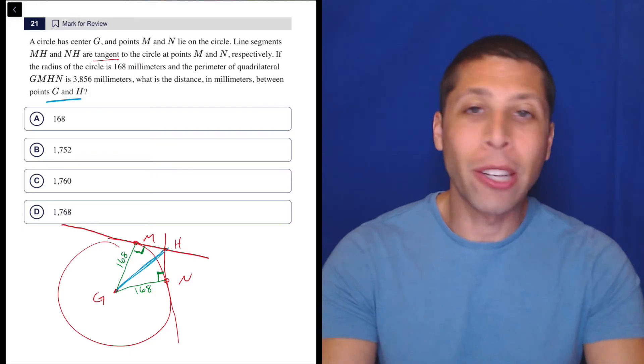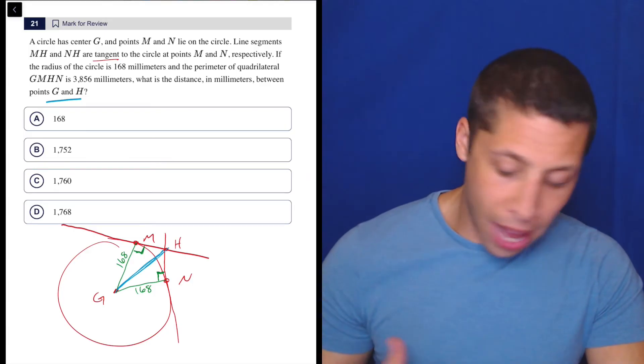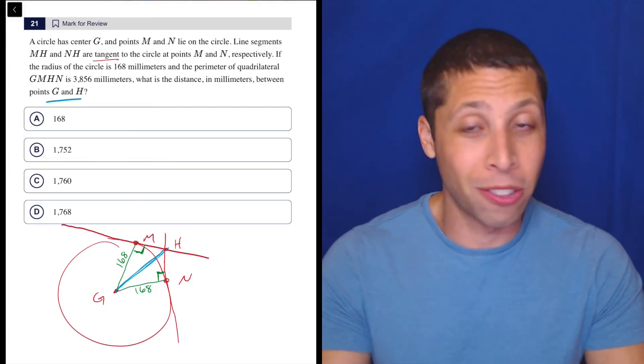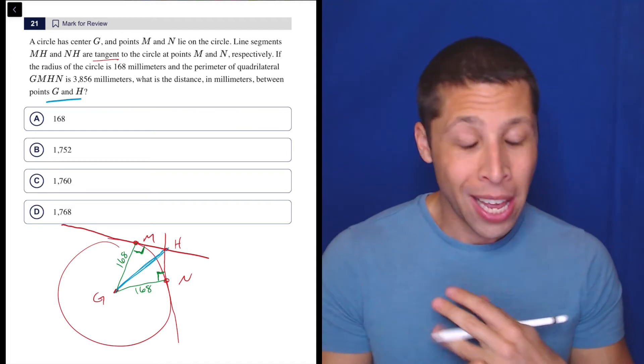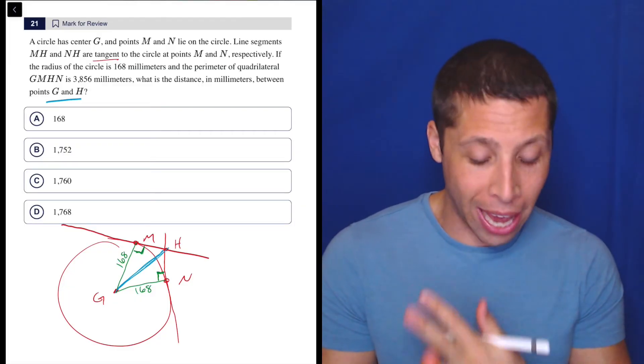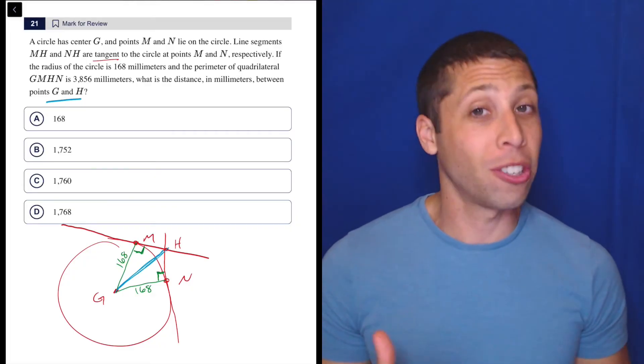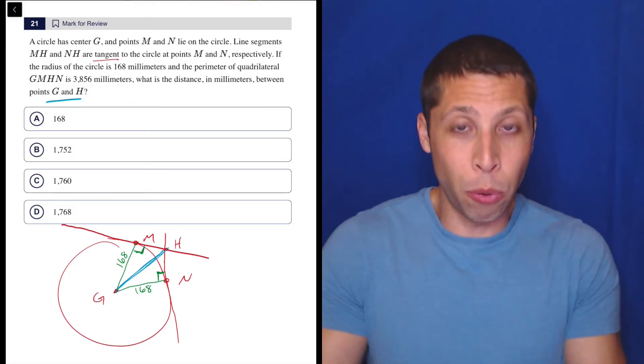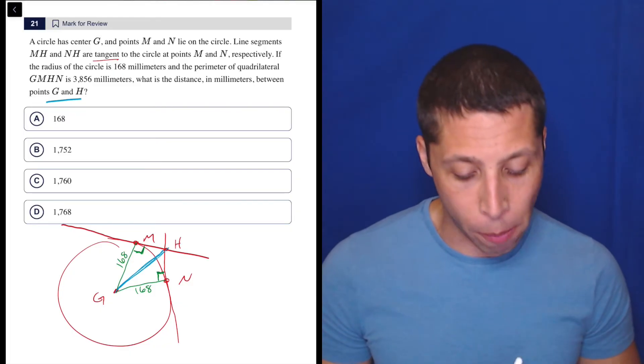The perimeter of the quadrilateral GMHN, which we just drew, is 3856 millimeters. What is the distance in millimeters between points G and H? Well, put stuff on the picture. They want the distance between G and H, so let's just connect G and H, and what do we do? When we do that, we make triangles. This is a good situation because, as I said, most hard geometry questions are really basic geometry questions kind of put together.